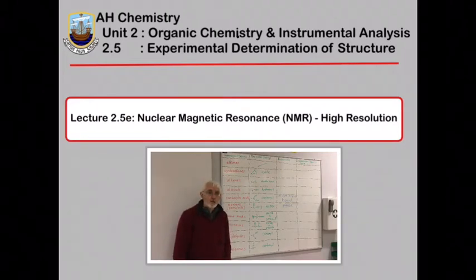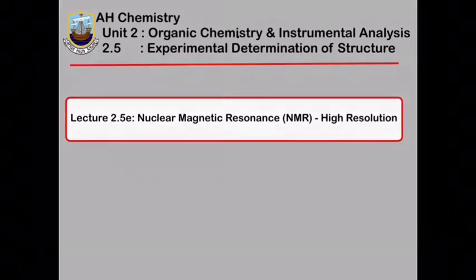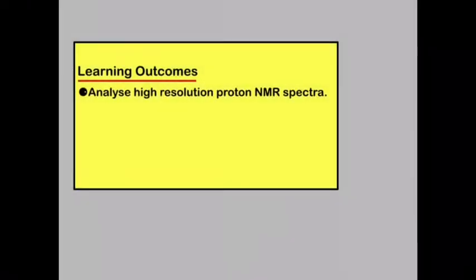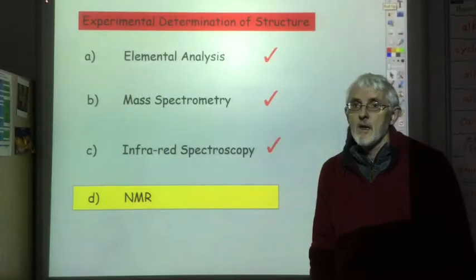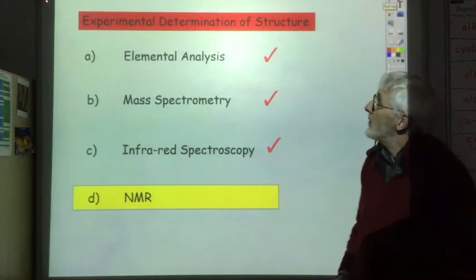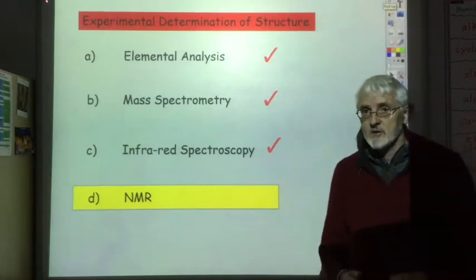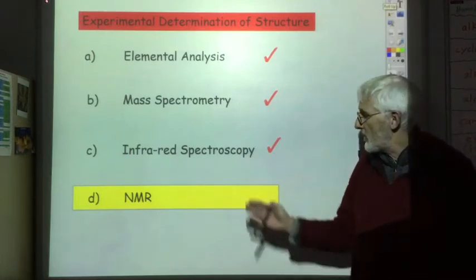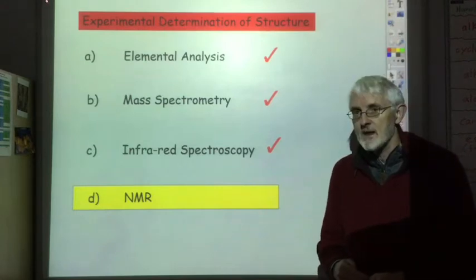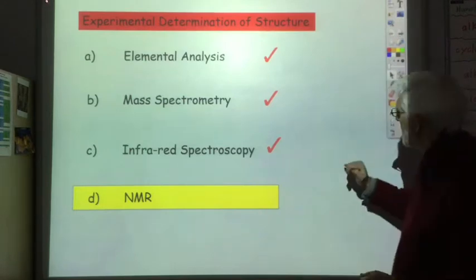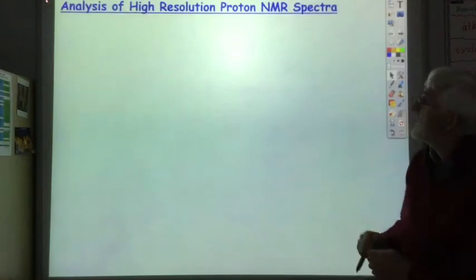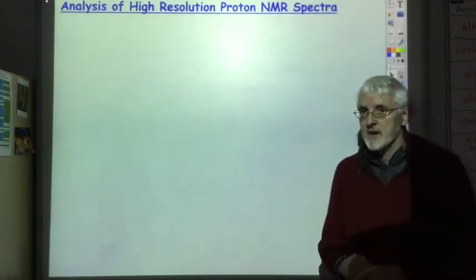In this lecture we're going to look at high-resolution NMR. By the end of this lecture you should be able to analyse high-resolution proton NMR spectra. This is the final lecture on experimental determination of structure. In the previous lecture we looked at low-resolution nuclear magnetic resonance, and in this lecture we're going to look at analysis of high-resolution proton NMR spectra.